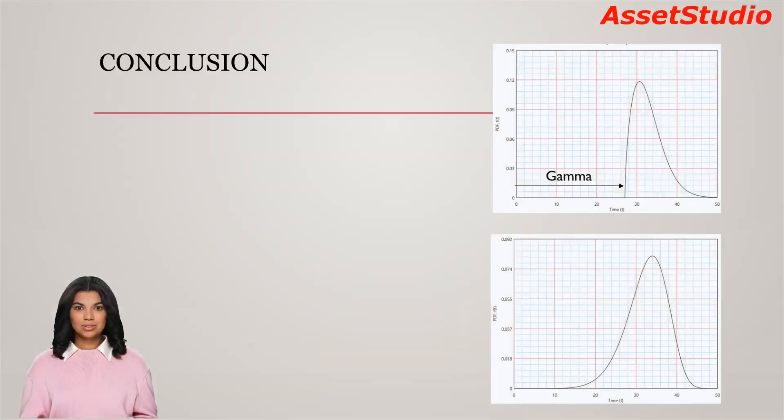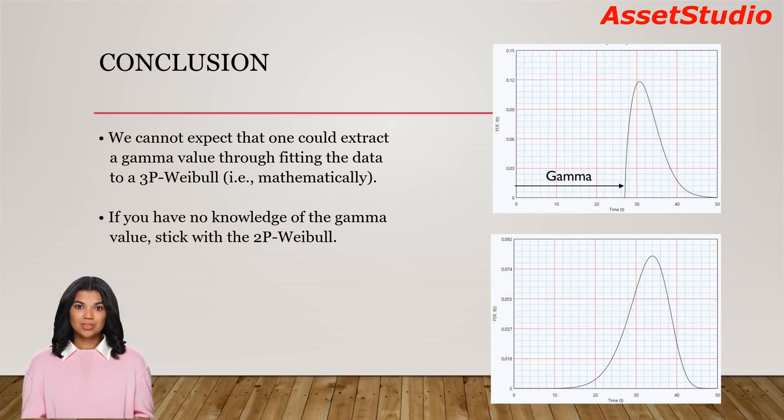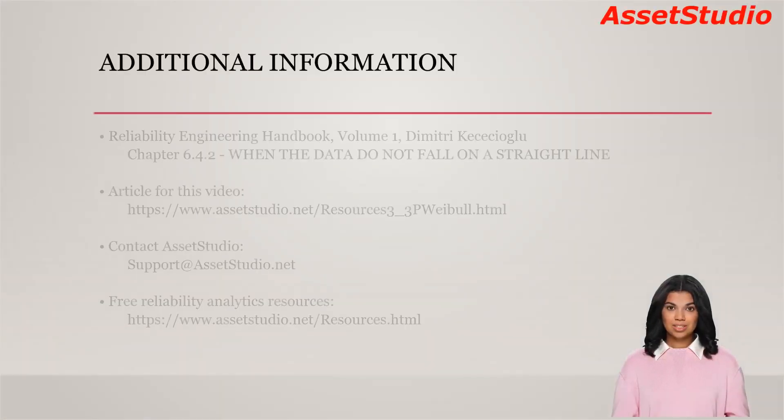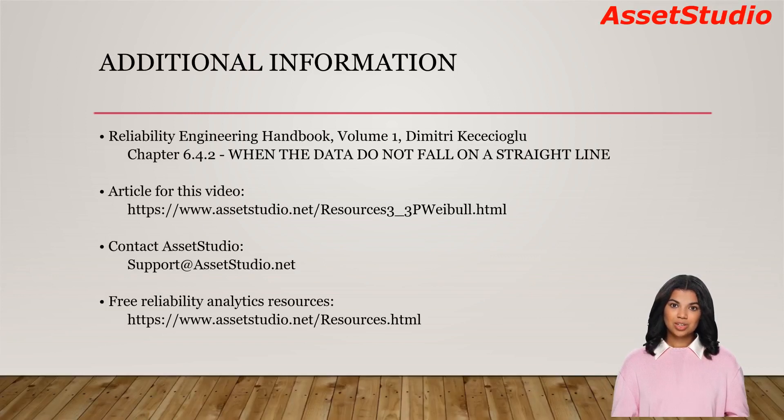In conclusion, we cannot expect that one could extract a gamma value through fitting the data to a 3-parameter Weibull. Gamma should be a quantity that is known to the analyst. If you lack this information, it is advisable to stick with the 2-parameter Weibull distribution. Thank you for viewing this video. You can also view the text-based article for this video using the link provided here.